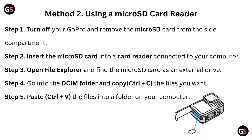Step two: insert the micro SD card into a card reader connected to your computer. Step three: open File Explorer and find the micro SD card as an external drive. Step four: go into the DCIM folder and copy (Ctrl+C) the files you want.